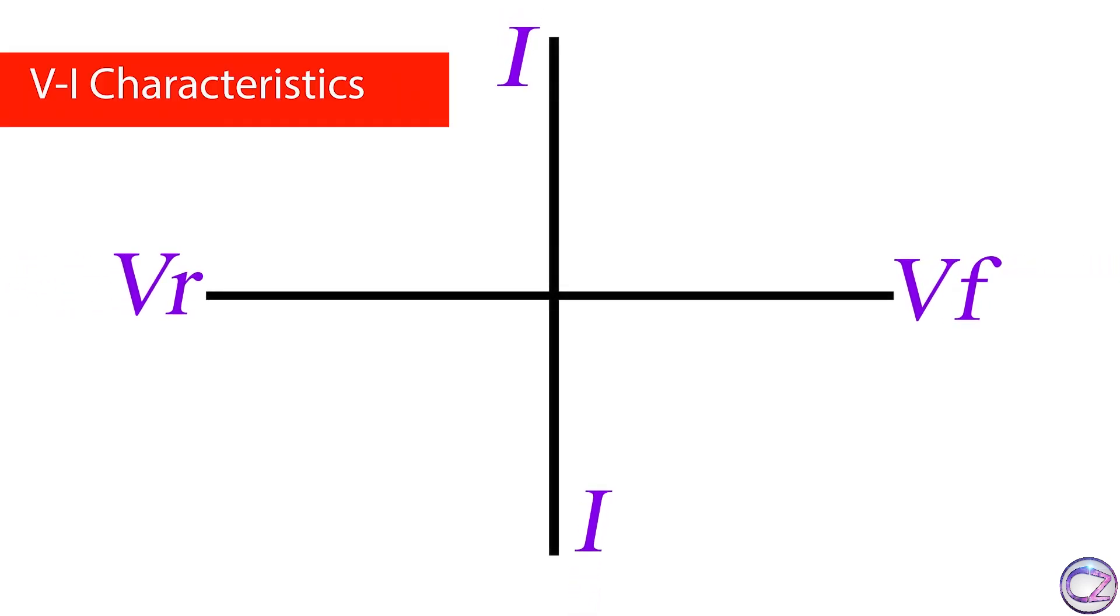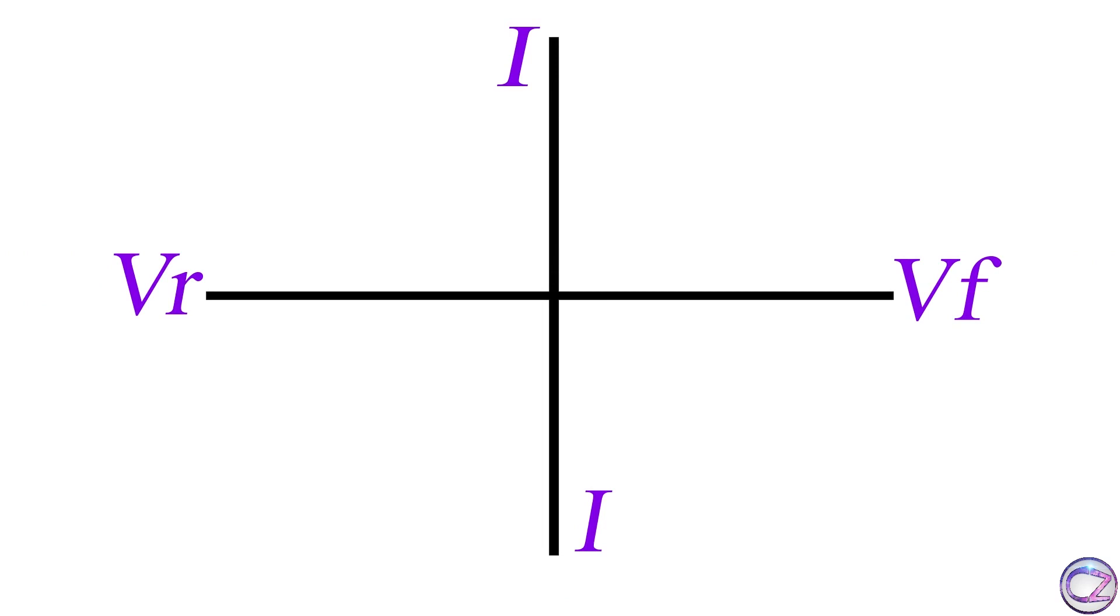Now, V-I characteristics. Actually, a diode has non-linear characteristics. Look at the graph. VF means forward voltage, VR means reverse voltage, and as usual, I is for current.